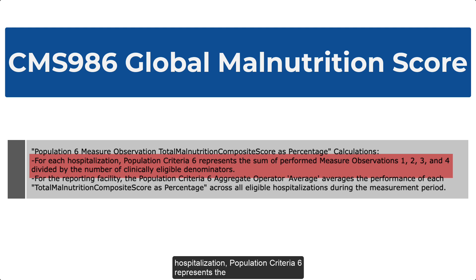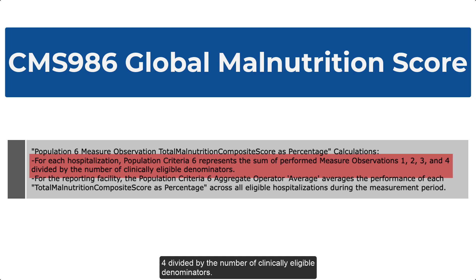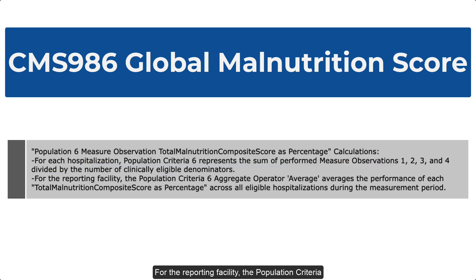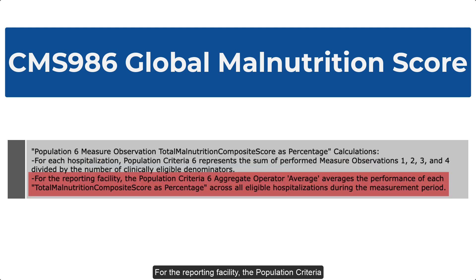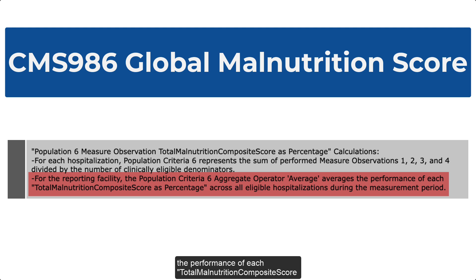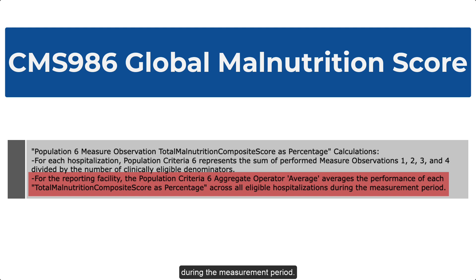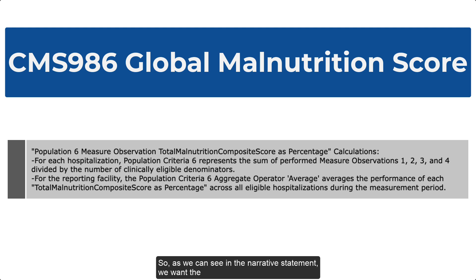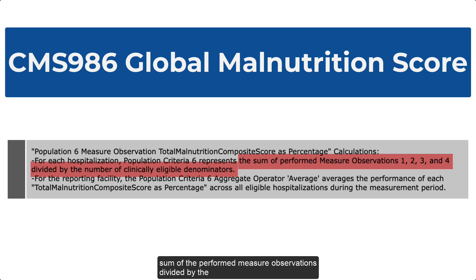For each hospitalization, population criteria 6 represents the sum of performed measure observations 1, 2, 3, and 4, divided by the number of clinically eligible denominators. For the reporting facility, the population criteria 6 aggregate operator average averages the performance of each total malnutrition composite score as percentage across all eligible hospitalizations during the measurement period. So as we can see in that narrative statement, we want the sum of the performed measure observations divided by the number of clinically eligible denominators.